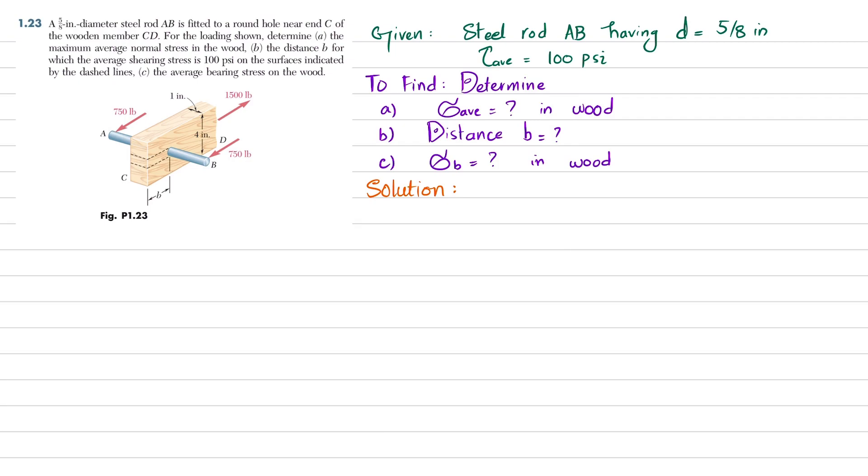First, in part a, we have to find maximum normal stress in wood. Now you can see that due to this tensile load of 1500 in this and 1500 in this, this wood member will be in tension. In tension, what will be the area contributed? This width, 4 inches, minus this diameter into this width will be the area.